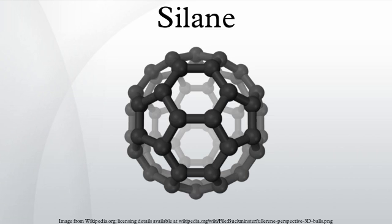According to the chemical equation: Si + 3HCl → HSiCl3 + H2. The trichlorosilane is then boiled on a resinous bed containing a catalyst which promotes the formation of silane and silicon tetrachloride, according to the chemical equation: 4HSiCl3 → SiH4 + 3SiCl4.